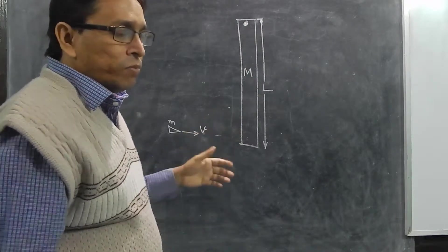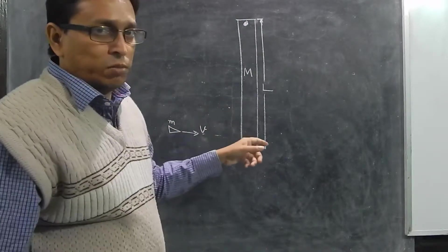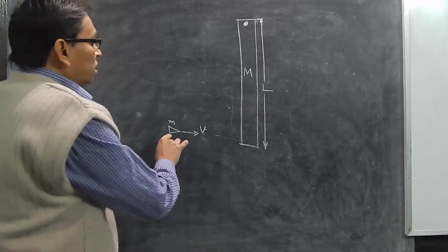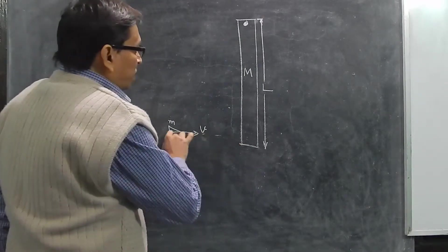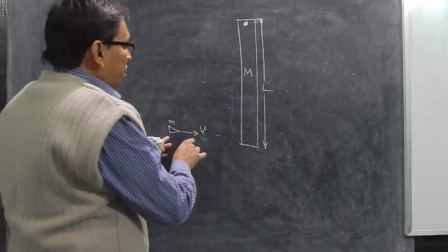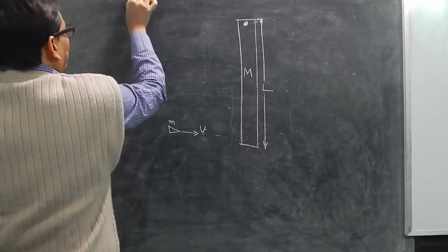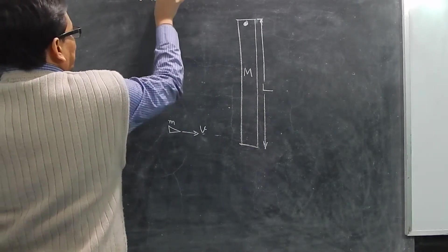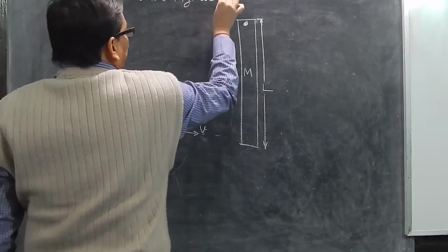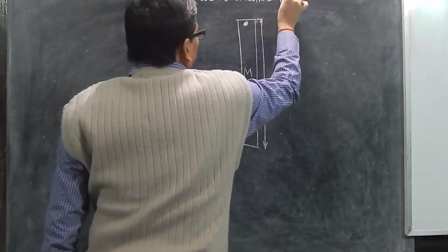This is a critical problem where we need to equate initial angular momentum to final angular momentum. The bullet is coming with linear momentum mV, and the perpendicular distance from the pivot to the bullet's line of motion is L. So the initial angular momentum equals mVL.